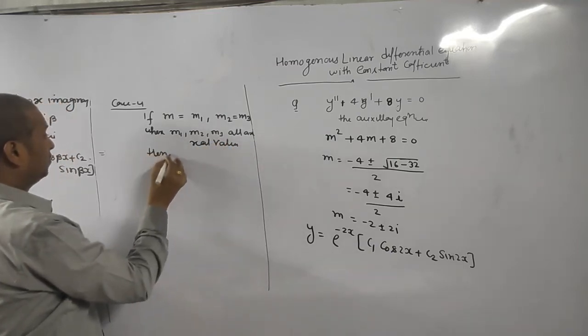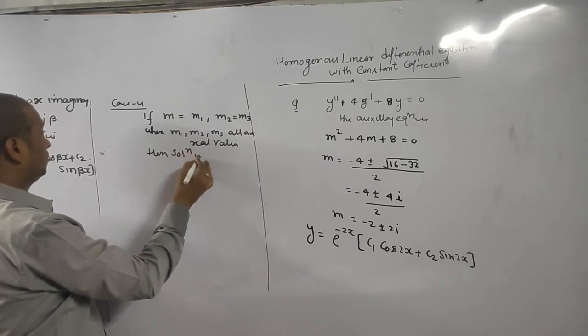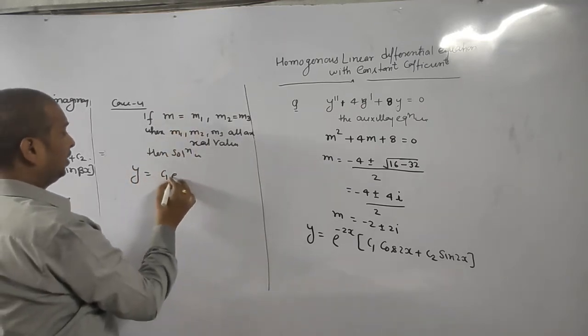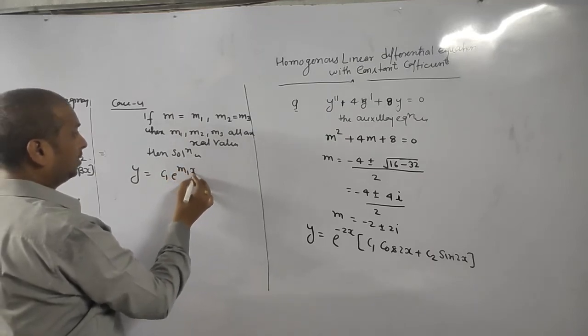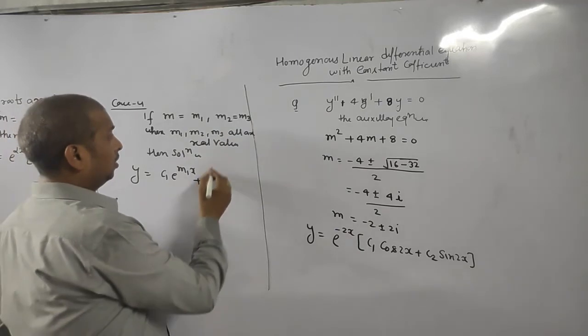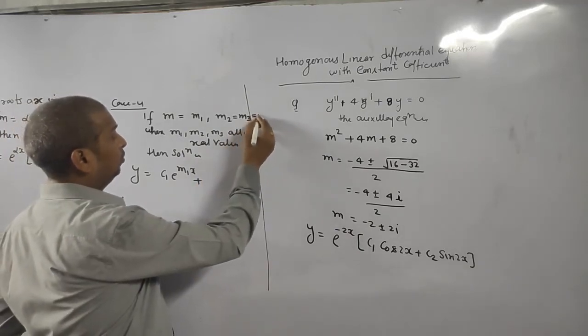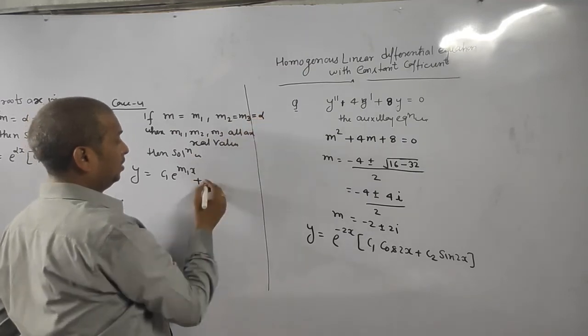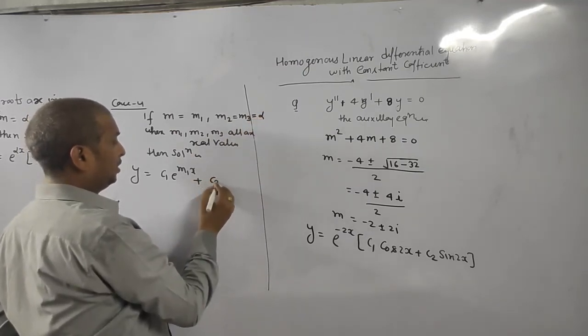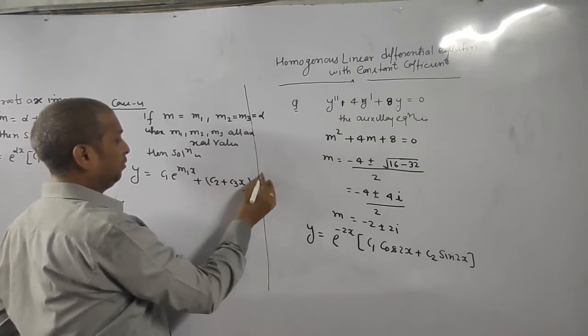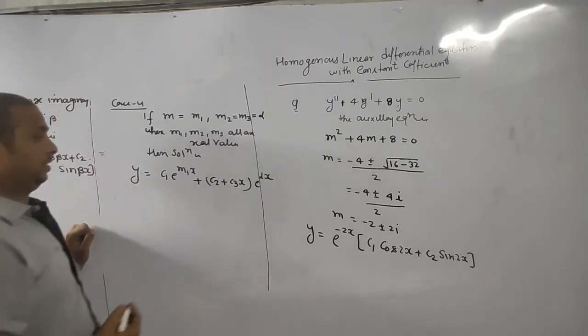Then solution is: for m1, c1 e to the power m1x. Because m2 and m3 equal and suppose equal to alpha, so this is (c2 plus c3x) e to the power alpha x. Correct?